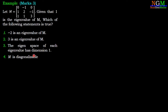We have four options. Option 1: -2 is an eigenvalue of M. Option 2: 3 is an eigenvalue of M. Option 3: the eigenspace of each eigenvalue has dimension 1. Option 4: M is a diagonalizable matrix.